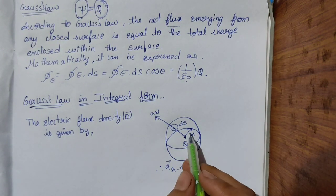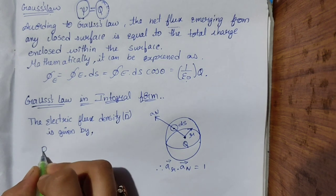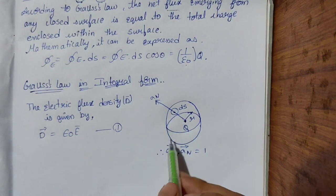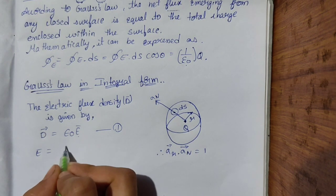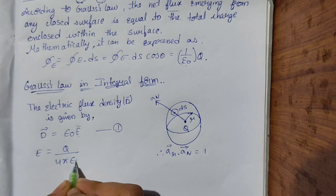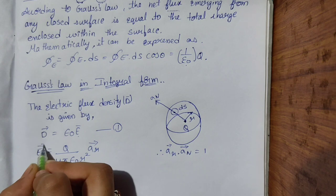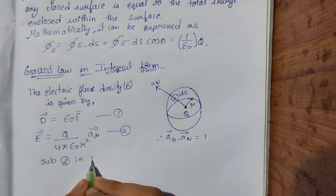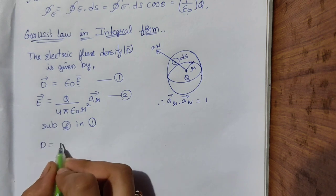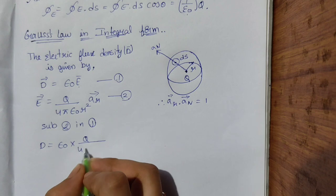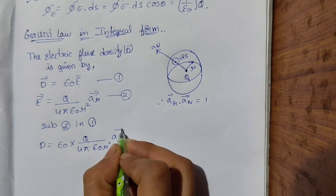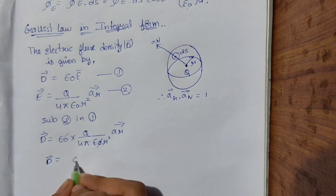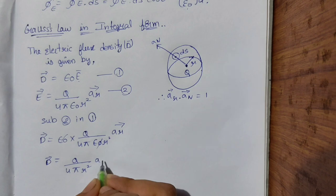Since electric flux density exists in this sphere, we can write D = ε₀ · E — keep this as equation 1. From the definition of E, we can write E = Q / (4π ε₀ r²) · â_r — keep this as equation 2. Substituting equation 2 into equation 1, we get D = ε₀ · Q / (4π ε₀ r²) · â_r. Cancelling ε₀, we get D = Q / (4π r²) · â_r — keep this as equation 3.